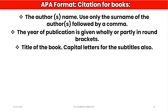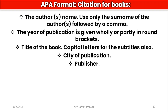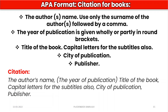Next we write the title of the book, using capital letters for subtitles as well. Then the city of publication is mentioned, followed by the publisher's name. So the full APA citation for a book is written as: author's surname, (year of publication), title of the book, city of publication, publisher.